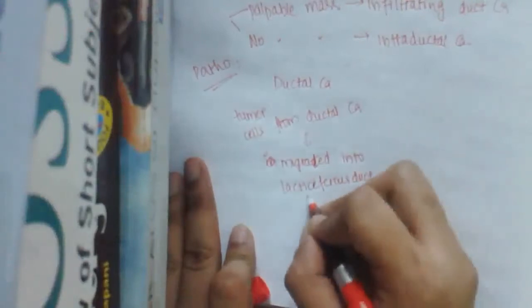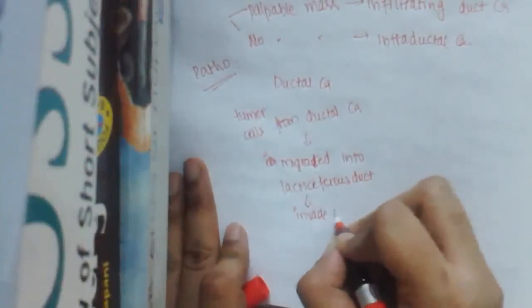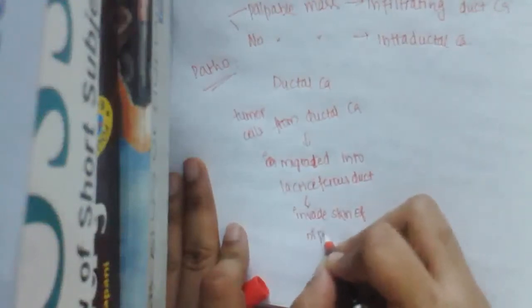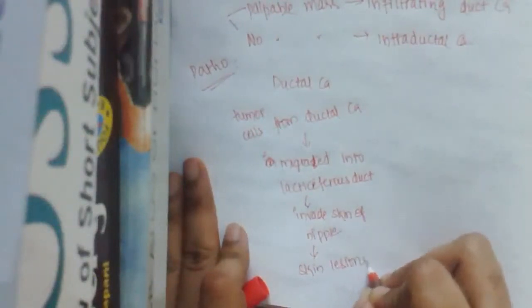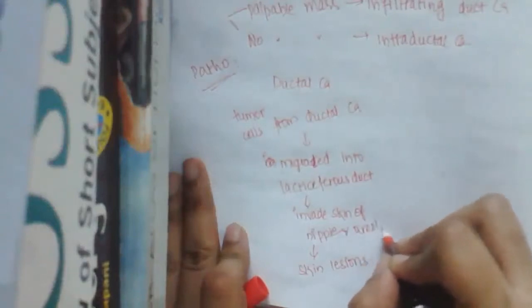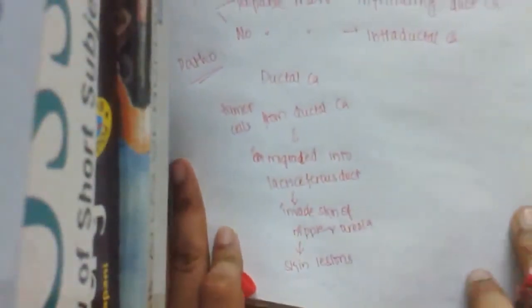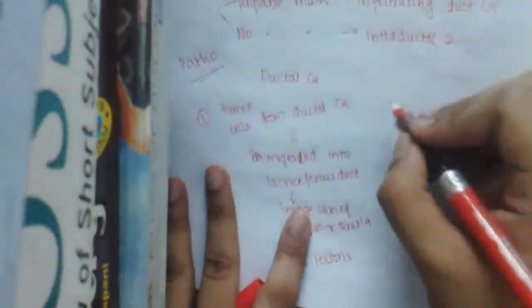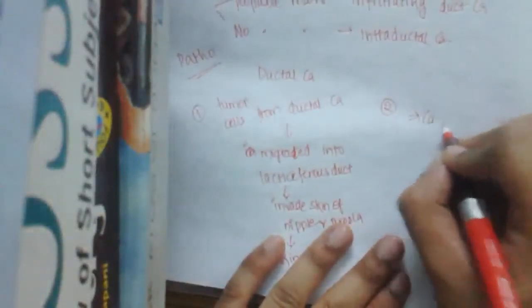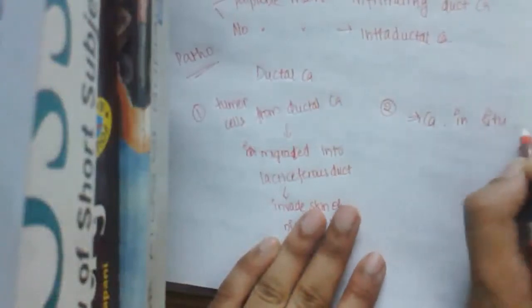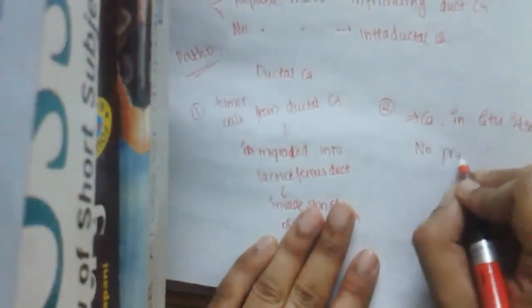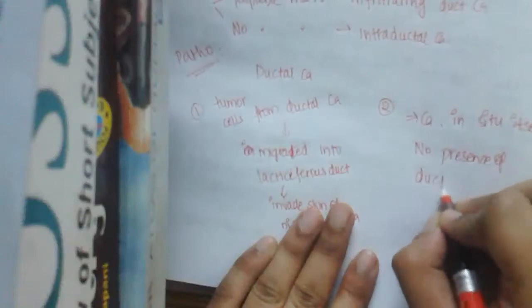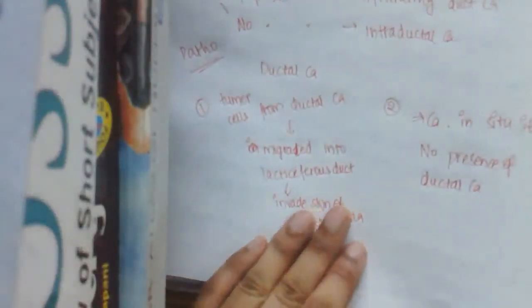From the lactiferous duct, the tumor cells invade the skin of the nipple, producing skin lesions. This is one hypothesis. The other hypothesis is that Paget's disease is a carcinoma in situ itself, and the presence of ductal carcinoma is not a prerequisite.